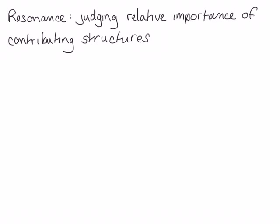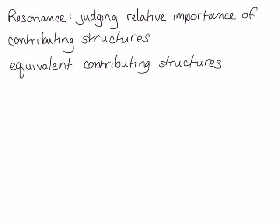In this video, we're going to talk about how to judge the relative importance of contributing structures to a resonance hybrid. In some resonance hybrids, all of the contributing structures contribute equally. These are called equivalent contributing structures. An example of this is the resonance hybrid of the carbonate ion.